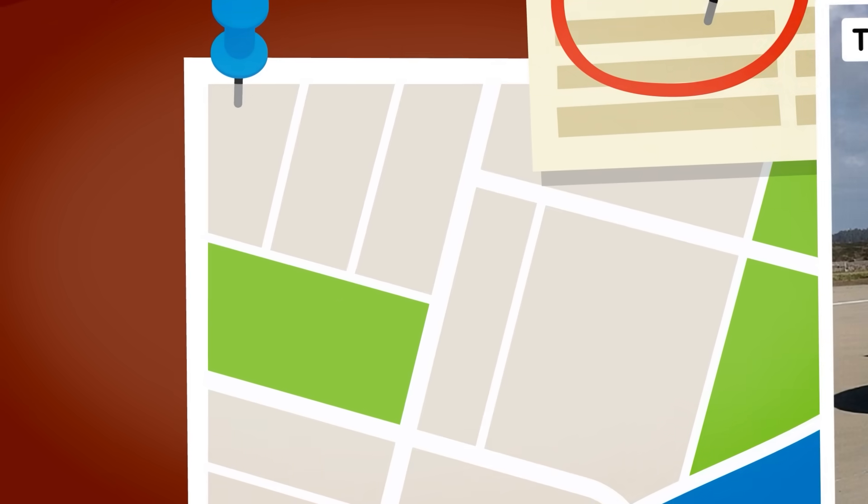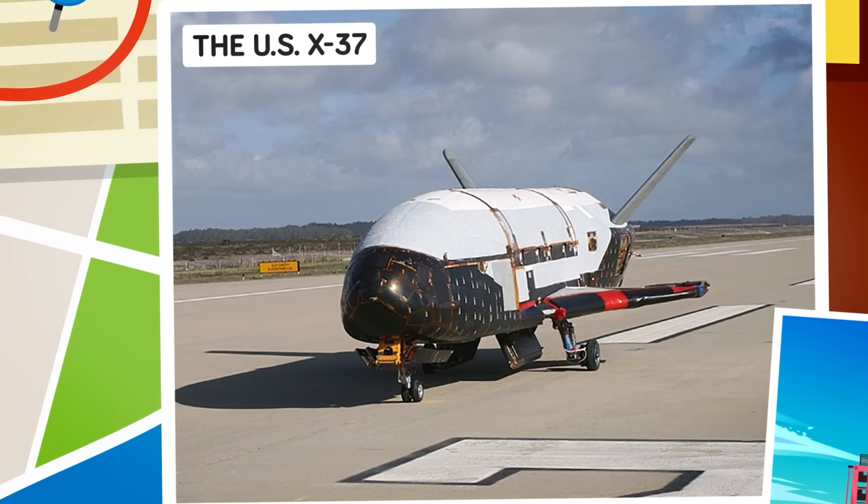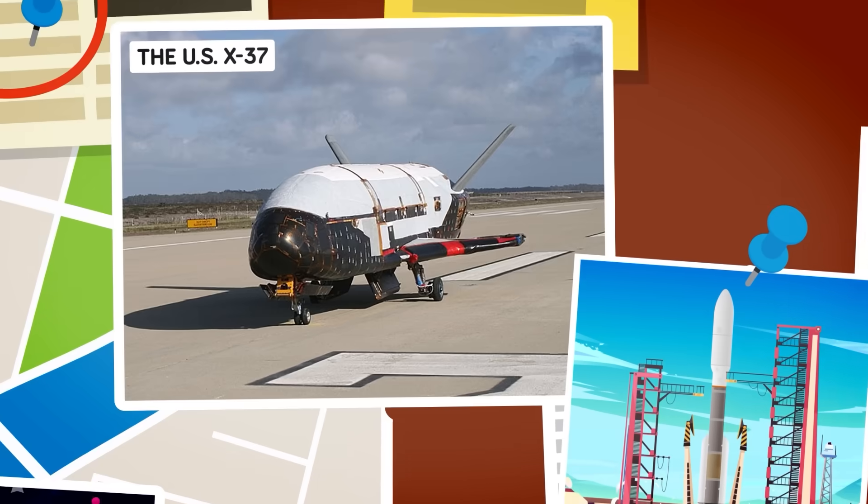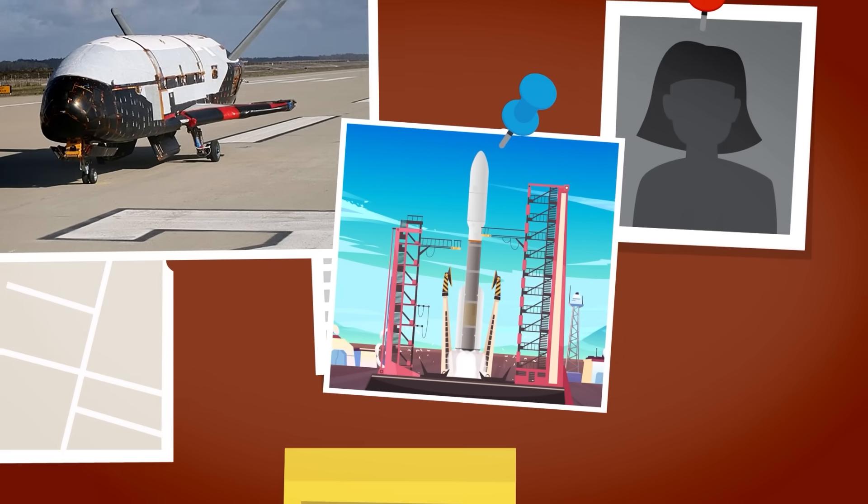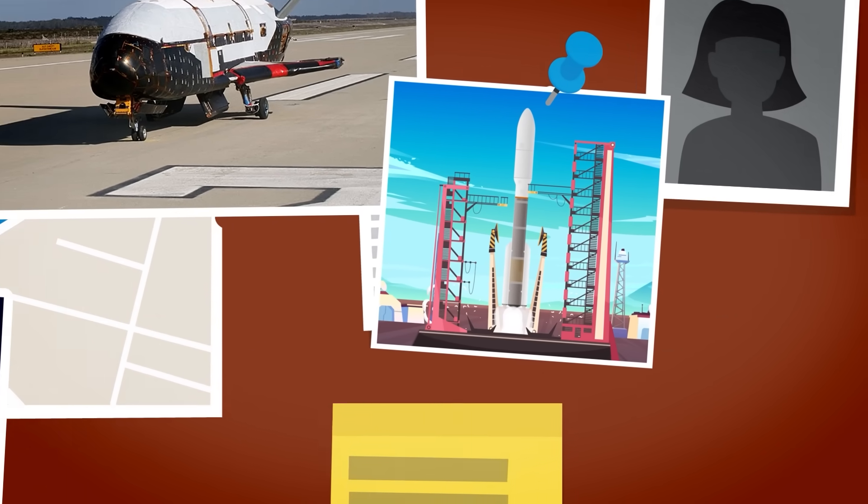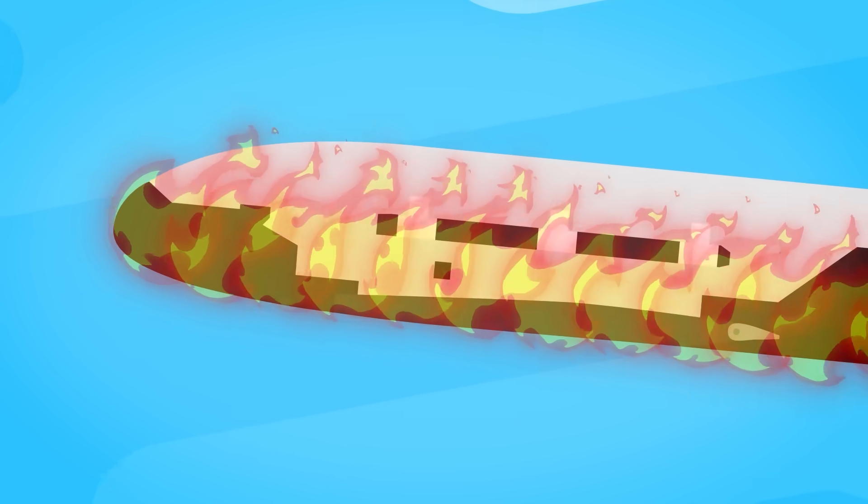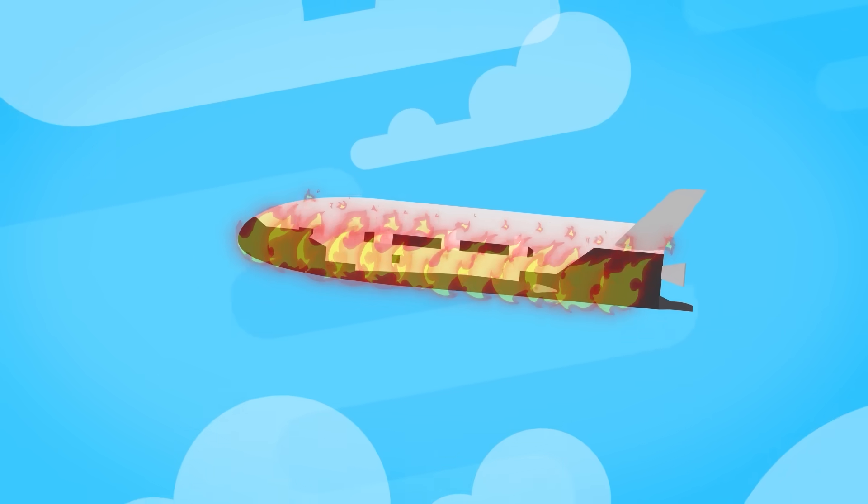The Boeing X-37, also called the Orbital Test Vehicle, is more of a modern space plane that was first used in 2010. It is made up of a reusable robotic craft that is carried into space by a rocket-powered launch vehicle, where it remains in orbit to aid in exploration and research. Once it's time for the X-37 to land, it will re-enter the atmosphere and glide back to the ground as a space plane.